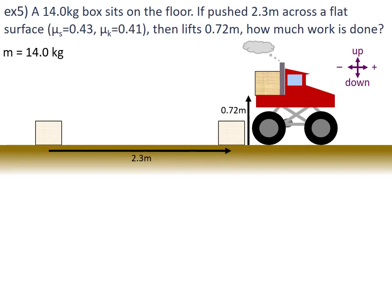The 2.3 metres relates to part one of this process, so in part one displacement is 2.3 metres. We also have a part two, which was the lifting into the back of the truck. We're told the μ_s value is 0.43 which is not usable, but the μ_k value is 0.41, and that is going to apply to part one of this two-part problem.